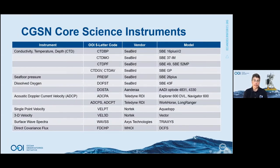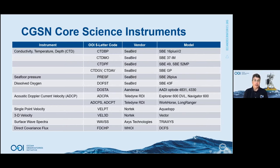You see on this slide and the next a list of all our instruments — primarily commercial off-the-shelf instruments from a variety of vendors including Seabird and Teledyne RDI. We use five-letter codes for the different models; for example, CTD-VP refers to a Seabird 16+ V2 CTD. The one instrument that's not commercial off-the-shelf is the direct covariance flux instrument, referred to as FDCHP, which was developed here at WHOI.